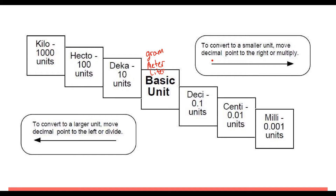To use the staircase: to convert to a smaller unit, move the decimal point to the right (or multiply); to convert to a larger unit, move the decimal point to the left (or divide). I think of it like a board game — you start at your given unit and count spaces to the target unit. For example, starting at deca and moving to deci is two spaces, so you move the decimal two places to the right.